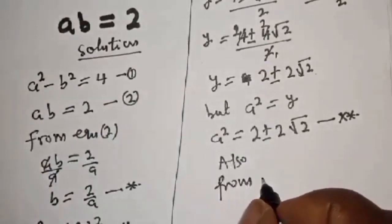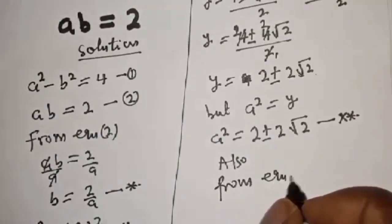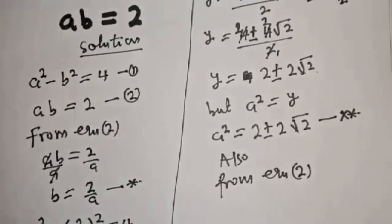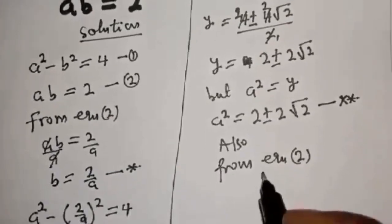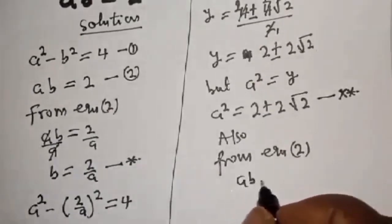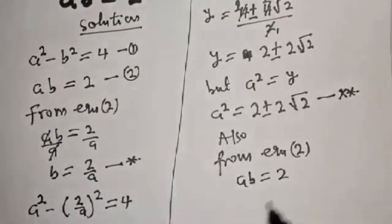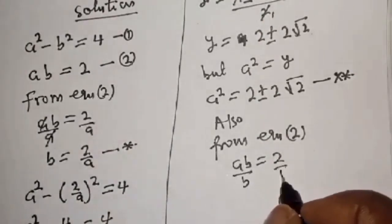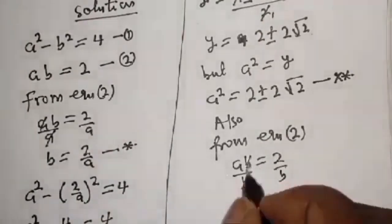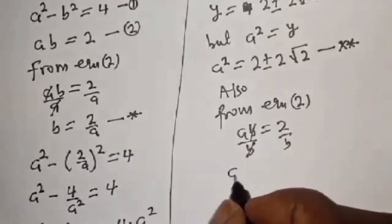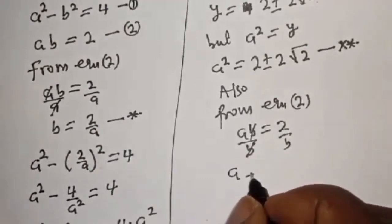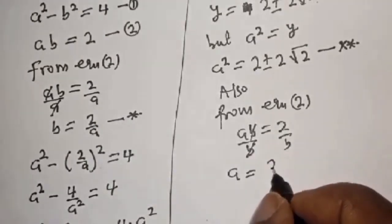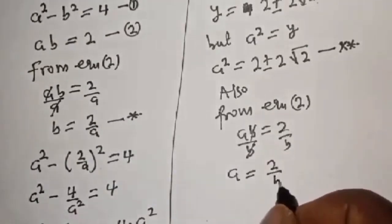Now from equation 2, let's make a the subject of the formula. ab equals 2; divide both sides by b, so a is equal to 2 over b.